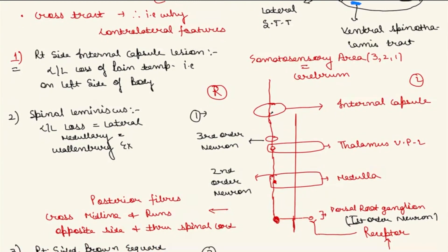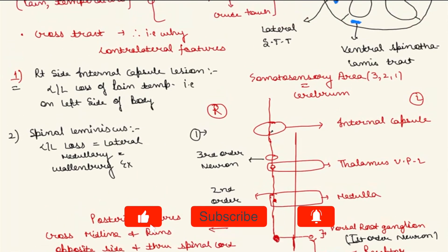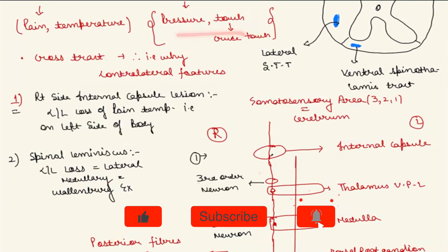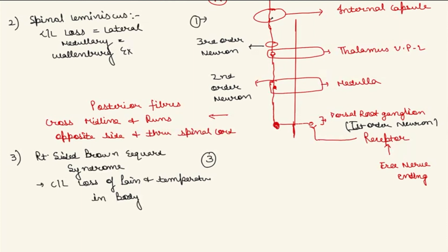If there is an injury to the spinal lemniscus — referred to as the lateral lemniscus in this system — then contralateral loss of pain, temperature, pressure, and crude touch occurs, as in medullary or Wallenberg syndrome. In right-sided Brown-Séquard syndrome, the right side of the spinal cord is transected, so contralateral loss of pain occurs because the fibers have already crossed in the spinal cord. In contrast, dorsal column fibers cross at the medial medulla, so dorsal column injury in Brown-Séquard gives ipsilateral loss.